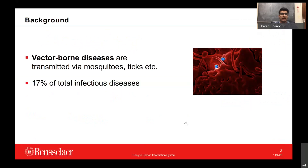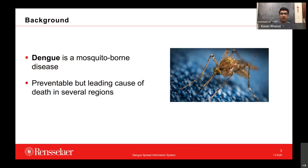For background on why we chose to do a project on Dengue: a vector-borne disease is basically a disease spread through vectors. Vectors are mosquitoes, ticks, etc., which can carry pathogens from one human to another, or from an animal to a human. It's important to study these vector-borne diseases because they amount to over 17% of total infectious diseases present around the globe today, amounting to over 400,000 deaths annually. There are several vector-borne diseases like malaria, Zika, and Dengue, and we decided to stick with Dengue because one of my team members was familiar with it.